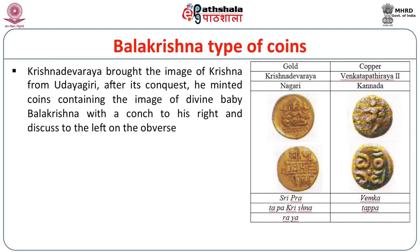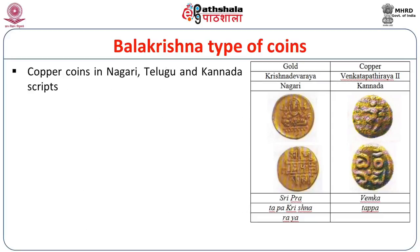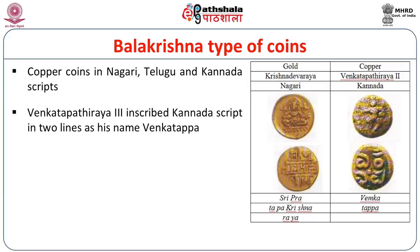Another important coin issued by Krishnadevaraya was the Balakrishna type. Krishnadevaraya brought the image of Krishna from Udayagiri after its conquest and minted coins containing the image of the divine baby Balakrishna, with a conch to his right and a discus to his left on the upper side. Srirangaraya I and Vangatapatharaya II also issued this type. The gold coin of Krishnadevaraya has three lines in Nagari legend with his name and the title Sri Pratapa. Copper coins show the legend in Nagari, Telugu, and Kannada scripts. Vangatapatharaya III inscribed Kannada script in two lines with his name Vankatapa.